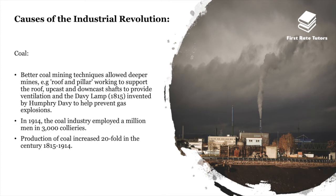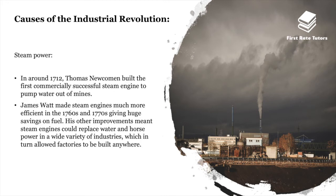In the coal industry, better mining techniques allowed deeper mines — for instance, roof and pillar working to support the roof, and upcast and downcast shafts for ventilation. The Davy lamp, invented by Humphry Davy in 1815, helped prevent gas explosions. By 1914, the coal industry employed a million men in 3,000 collieries, and production of coal increased 20-fold in the century between 1815 and 1914.